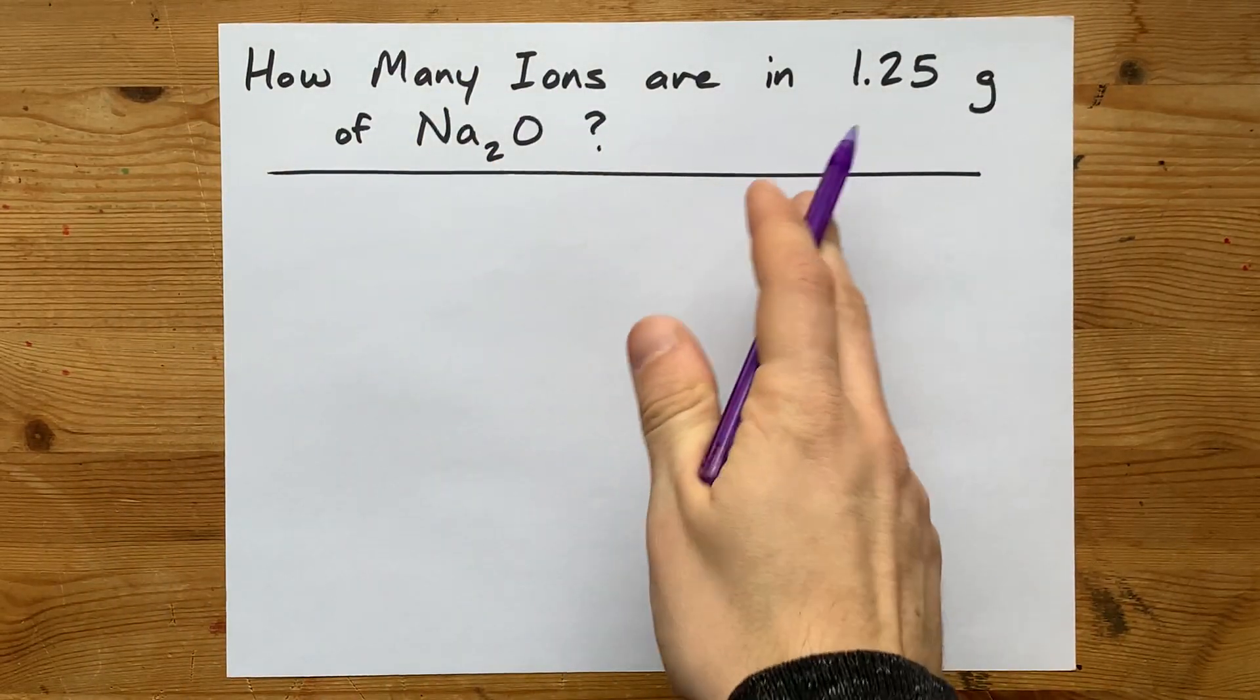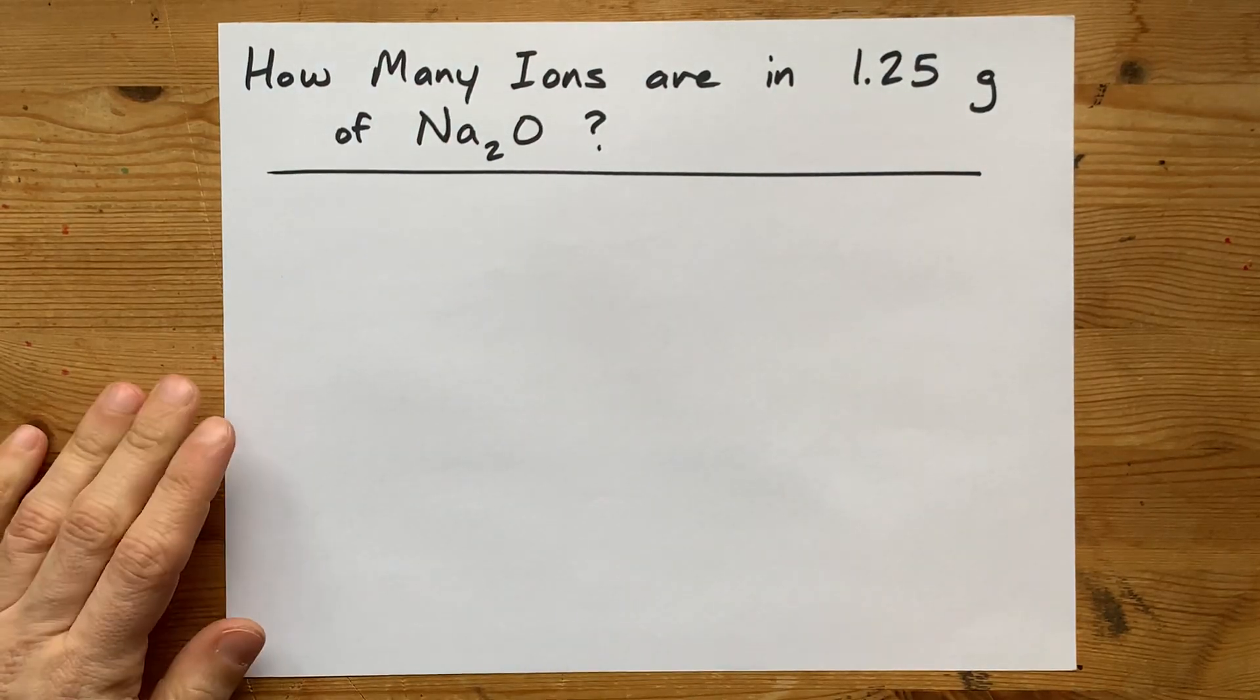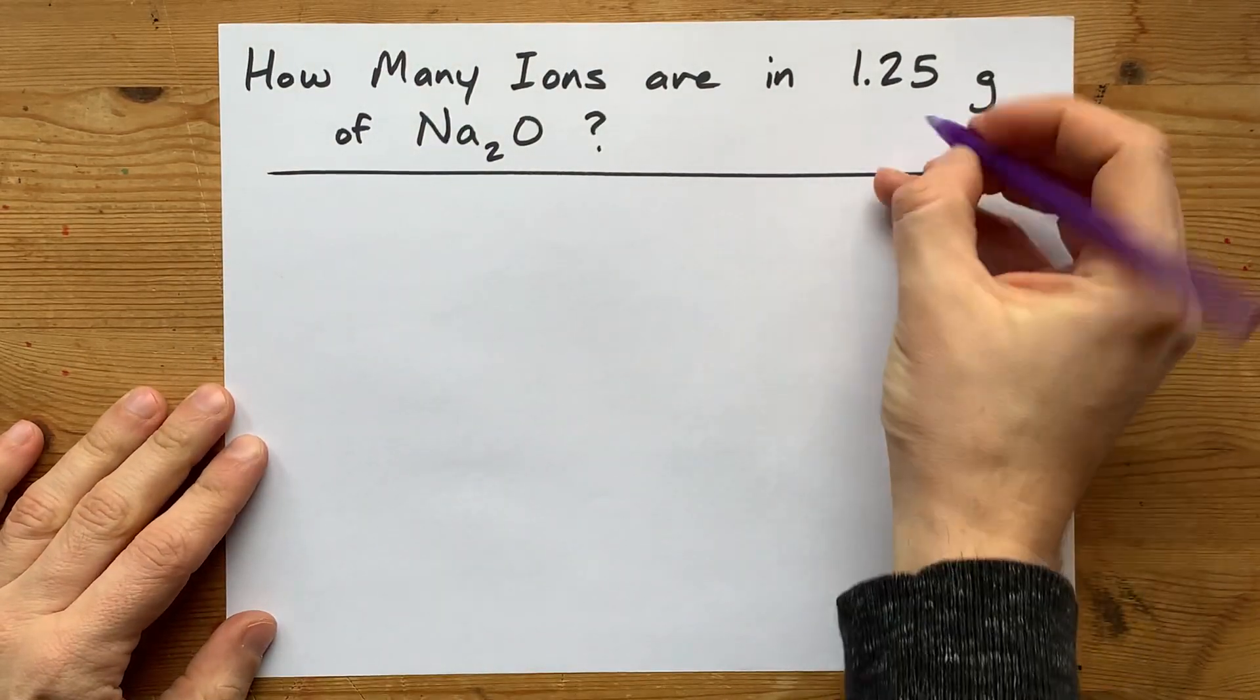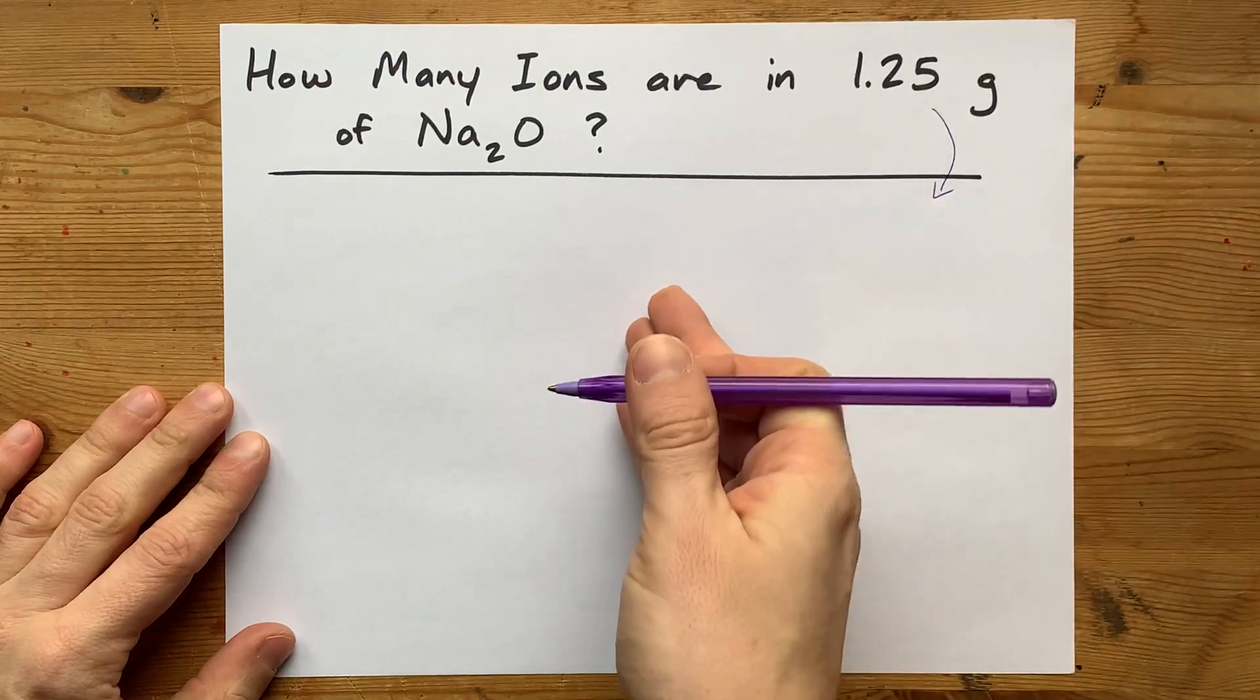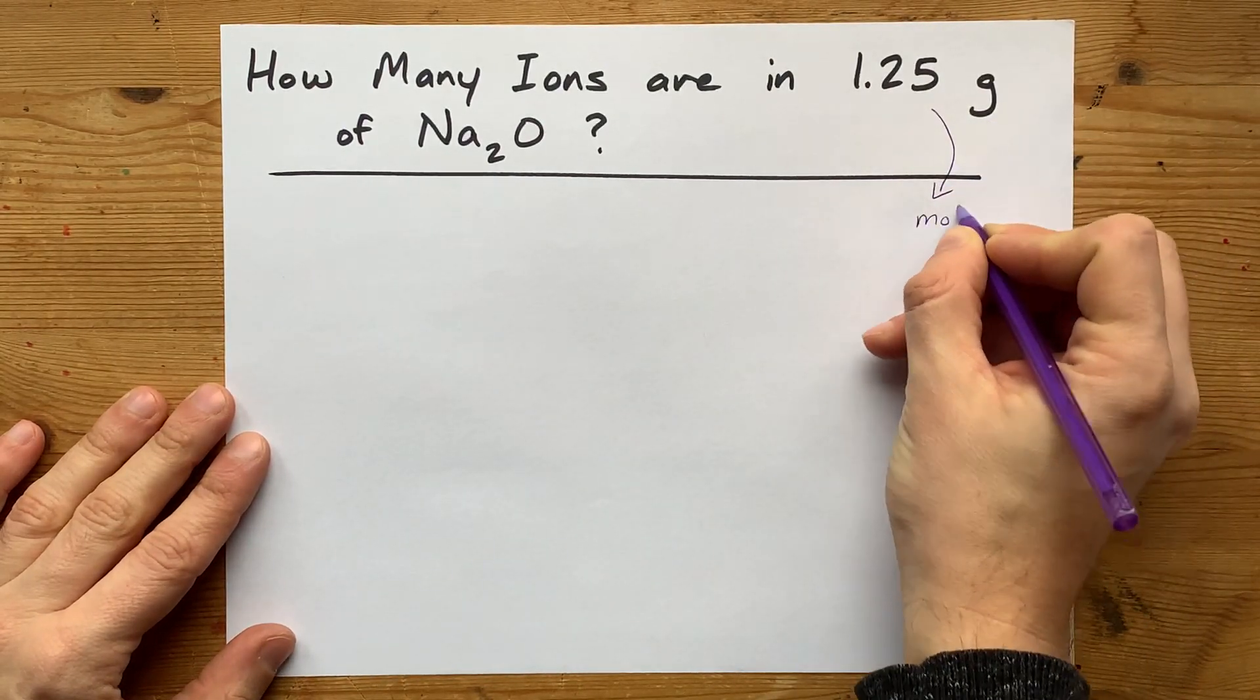How many ions are in 1.25 grams of Na2O, or sodium oxide? Well, how many implies that we are going to try to count the number of them, which means we're going to have to convert grams to moles.